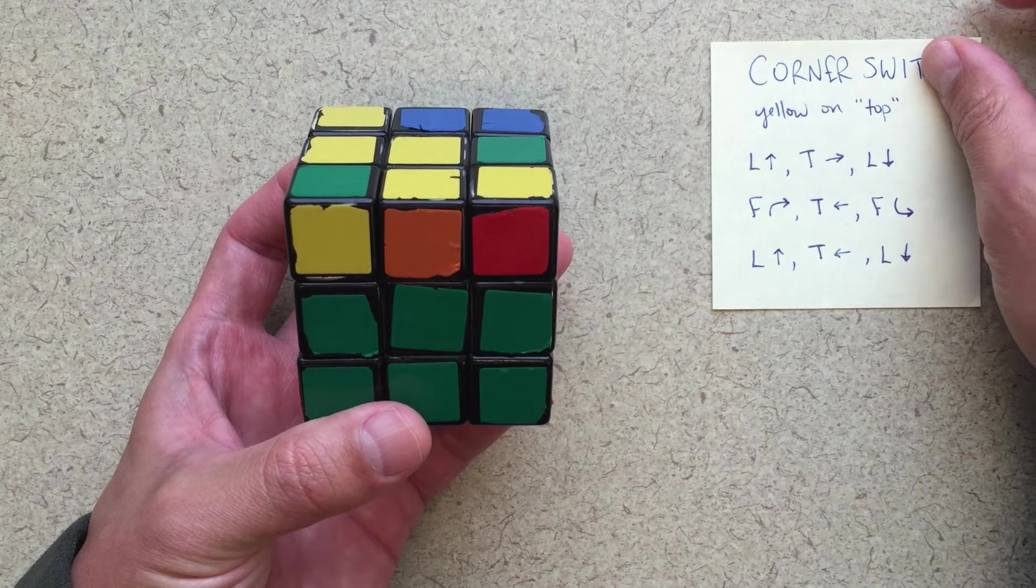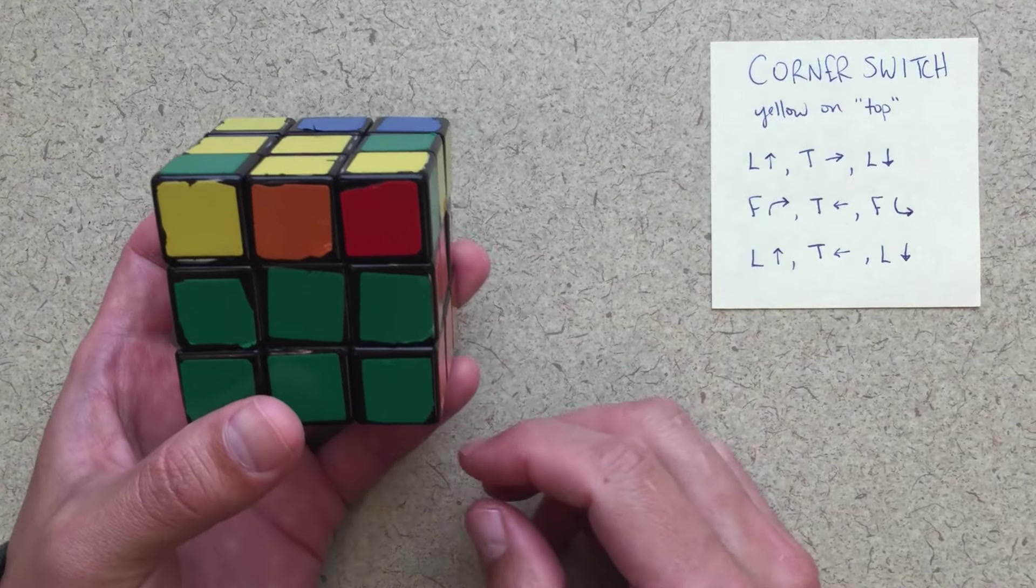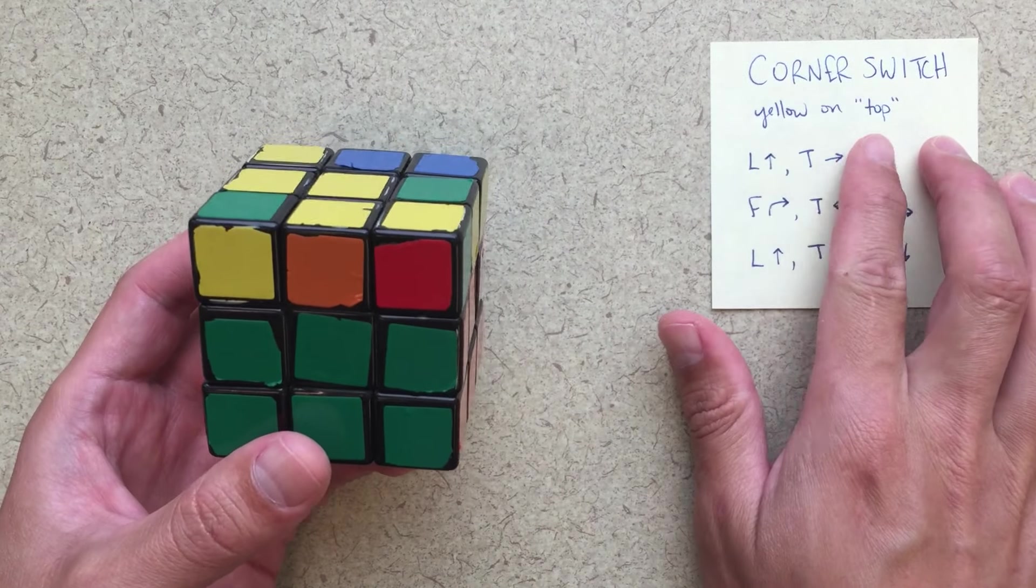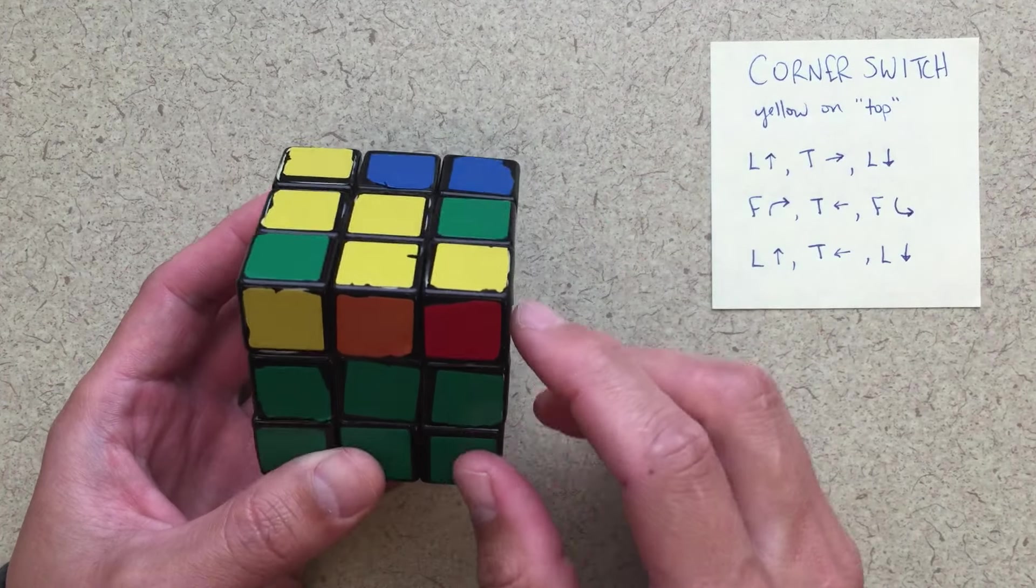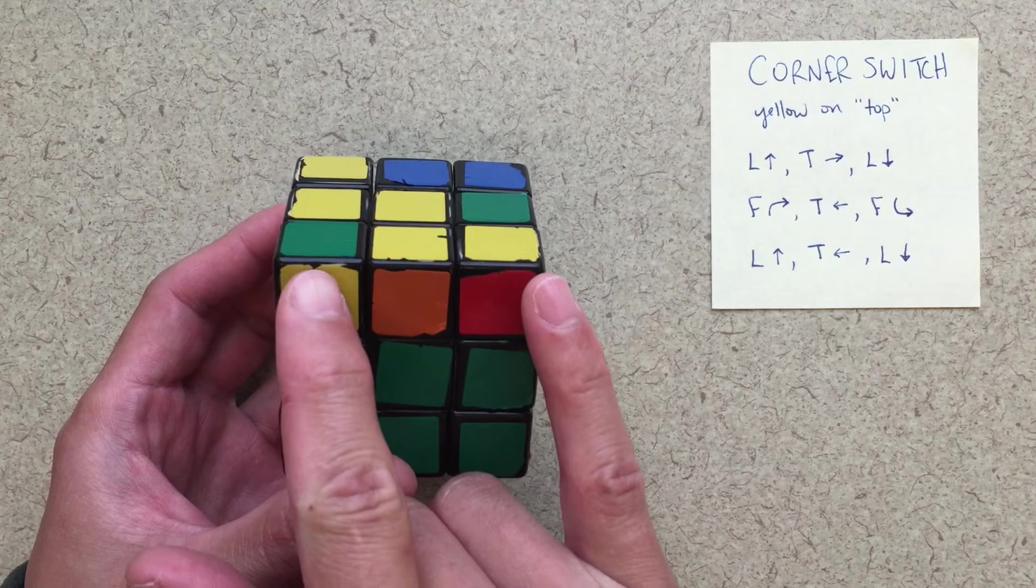So this is the actual corner switcher move. So I'll put this post-it right here. So this is going to tell me that I want yellow on top. So yellow is going to be on top.